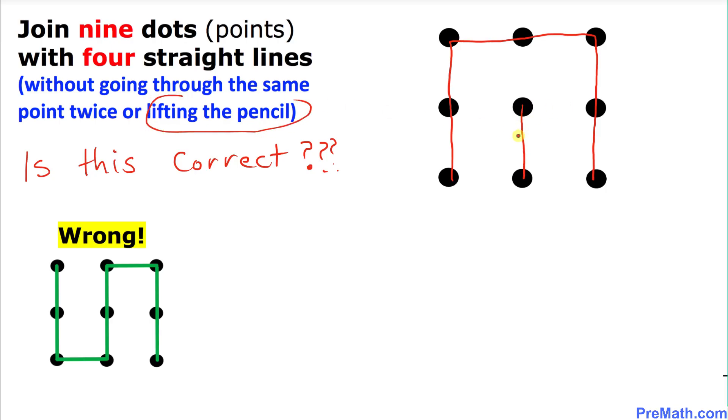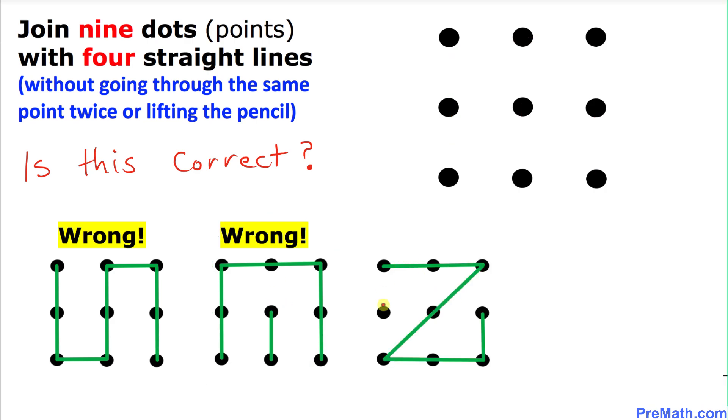Now my question is: is this correct? As you can see, we lifted our pencil by just moving this line over here, so that means this is once again not correct. Thus, this second strategy is false again because we were not supposed to lift our pencil.